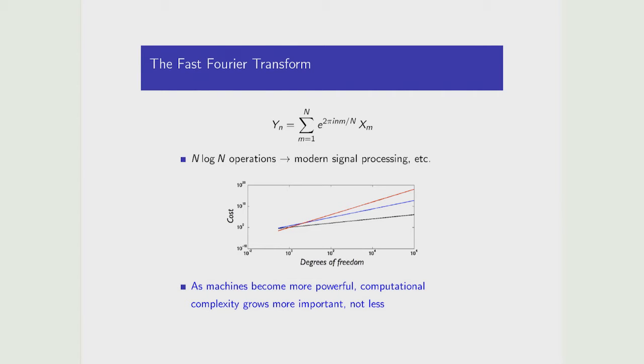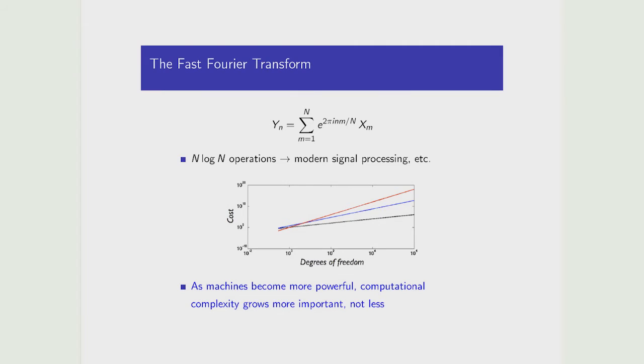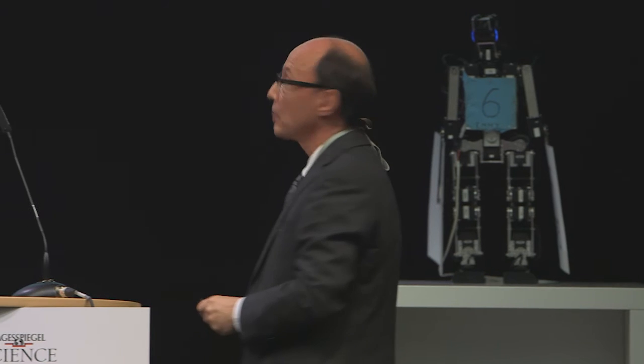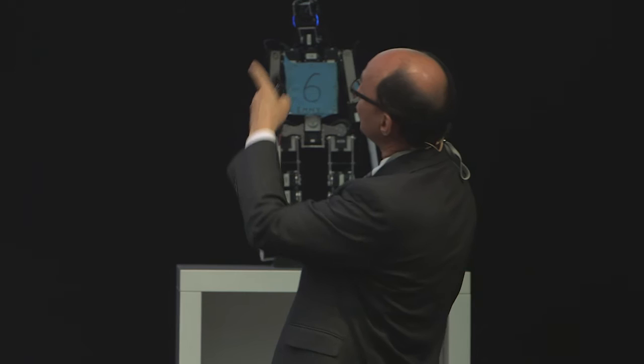The fast Fourier transform corresponds to a matrix-vector product that can be done in n log n operations instead of n-squared. Simply being able to do that sum quickly enabled much of modern computing — essentially all of modern signal processing was driven by that discovery.